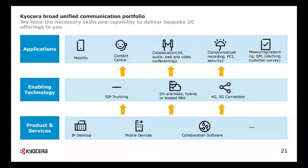I want to give you an understanding of the broader unified communications portfolio. Although we're talking about the collaboration path today, we also look after IP desktop, mobile devices, and collaboration software. That covers SIP trunking, on-premise, hybrid and hosted PBXs, 4G and 5G connectivity. This opens up to all the applications companies are running: mobility, contact centres, collaboration including instant messaging, audio, web and video conferencing. We tick all boxes around compliance — call recording and PCI. Reporting has also become increasingly important, and we can now deliver analytics and reporting to SMEs as well as large PLCs.